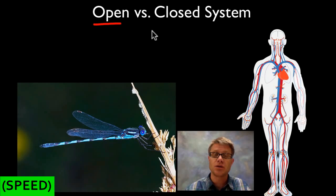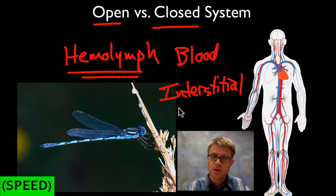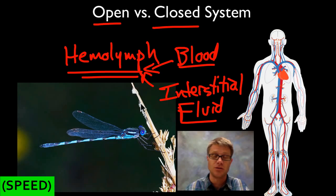Before we get to the elements of the human circulatory system, you should know that there are different types of circulatory systems. Things like insects and spiders don't have blood per se — they have something called hemolymph, which is both blood and interstitial fluid combined. Interstitial fluid is the fluid that bathes the cells. In us, we keep blood inside blood vessels and interstitial fluid everywhere else, which is the difference between a closed and open circulatory system.